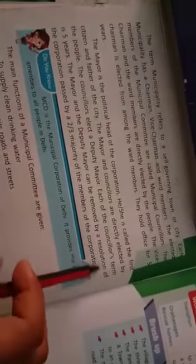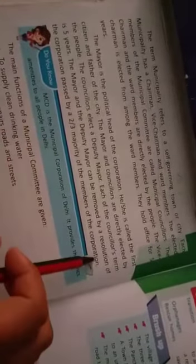The mayor and the deputy mayor can be removed by a resolution of the corporation passed by a two-thirds majority of the members of the corporation. If you want to change your mayor, then two-thirds of people must agree to change the mayor. Then you have to elect again your member. Otherwise, they are doing work for five years.